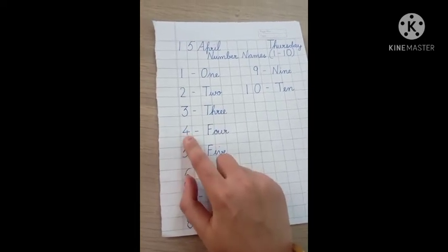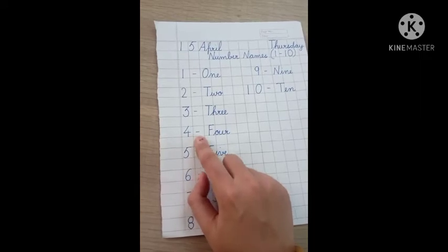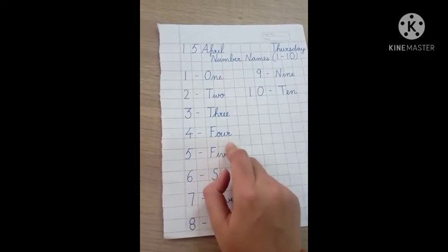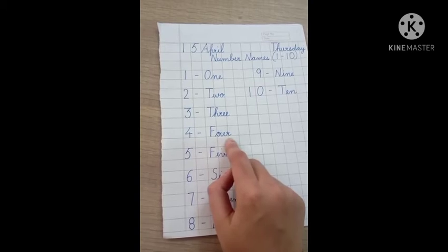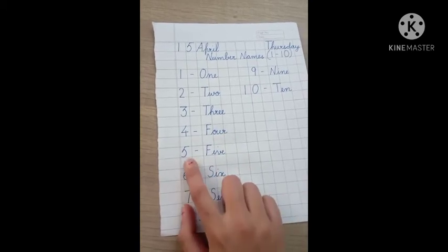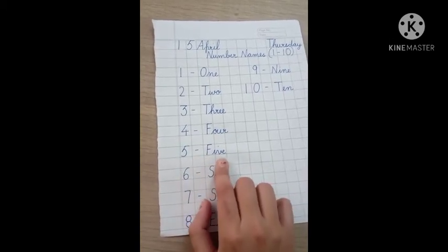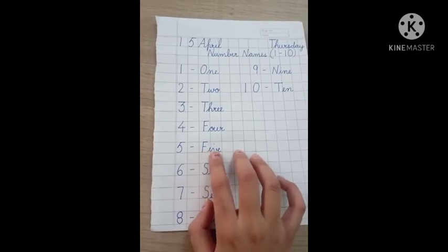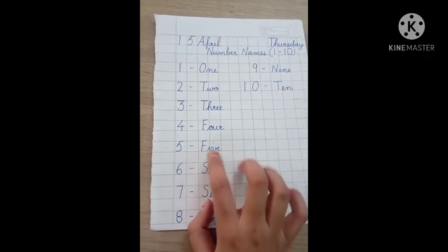4. See the formation of 4? 4 hyphen, F, O, U, R, four. F capital and rest of the letters, small. 5. F, I, V, E, five. F capital, I small, V small, E small, 5.